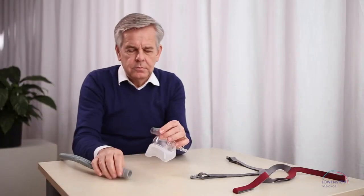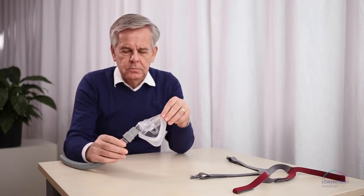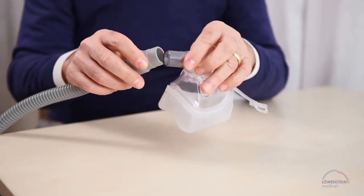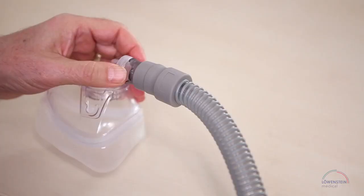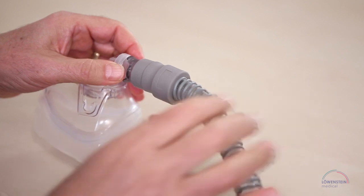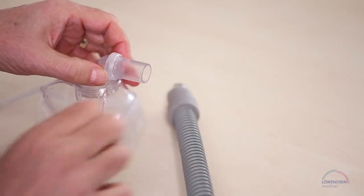If you want to connect the mask to the tube, simply push the tube onto the rotating sleeve up to the top edge. Later on, to loosen the mask from the tube, pull the rotating sleeve away from the mask.